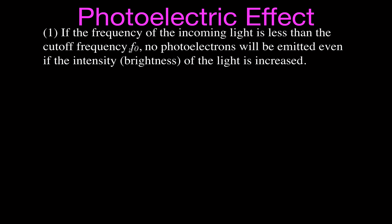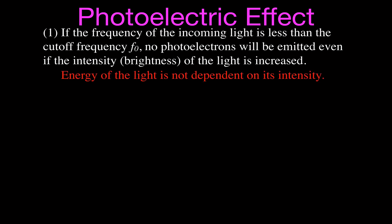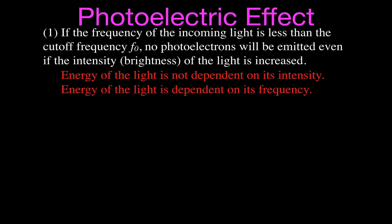That is because the energy of the incoming light is not related to the intensity. The energy of the incoming light is directly related to the frequency. So if we increase the frequency, we increase the energy. If we increase the intensity — the brightness — then we're just getting more photons, but we're not getting photons with more energy. The energy of the light is not dependent on its intensity, but is dependent upon the frequency.